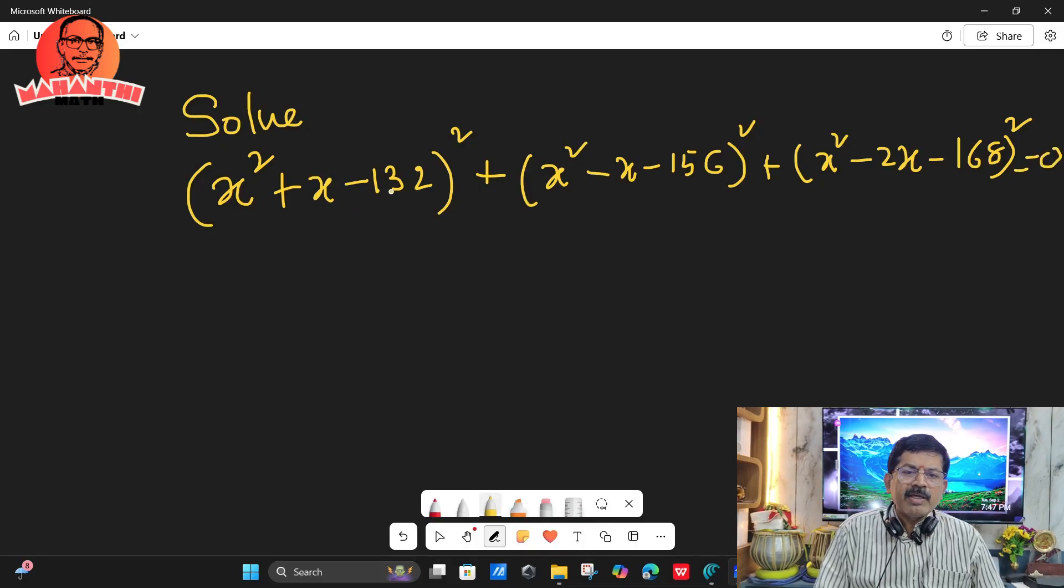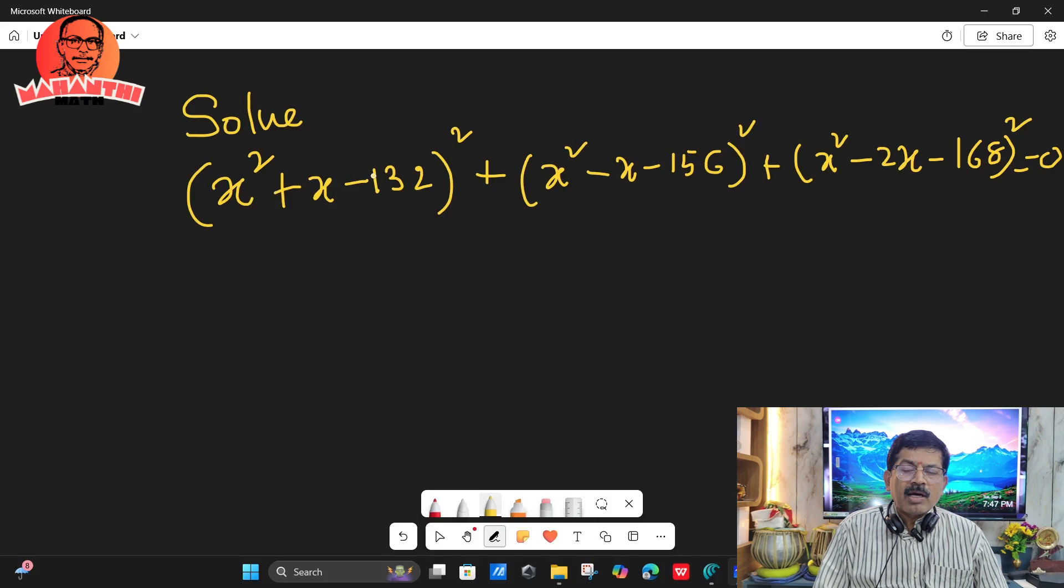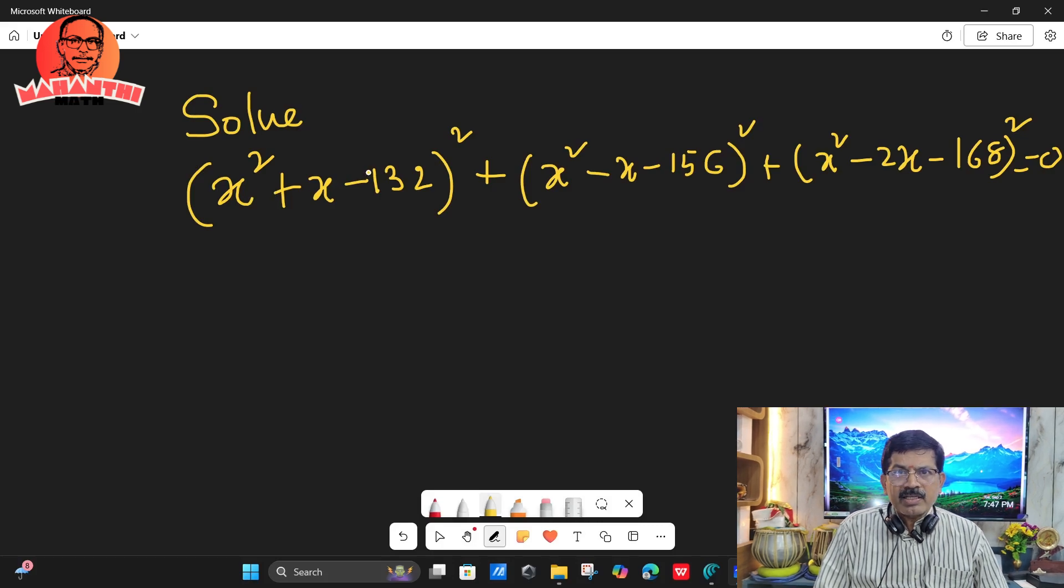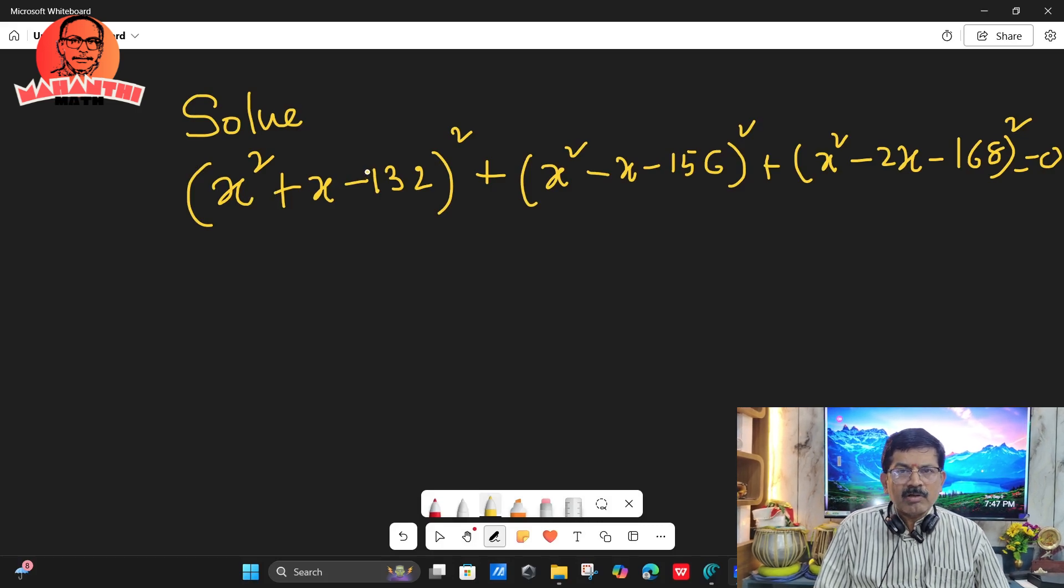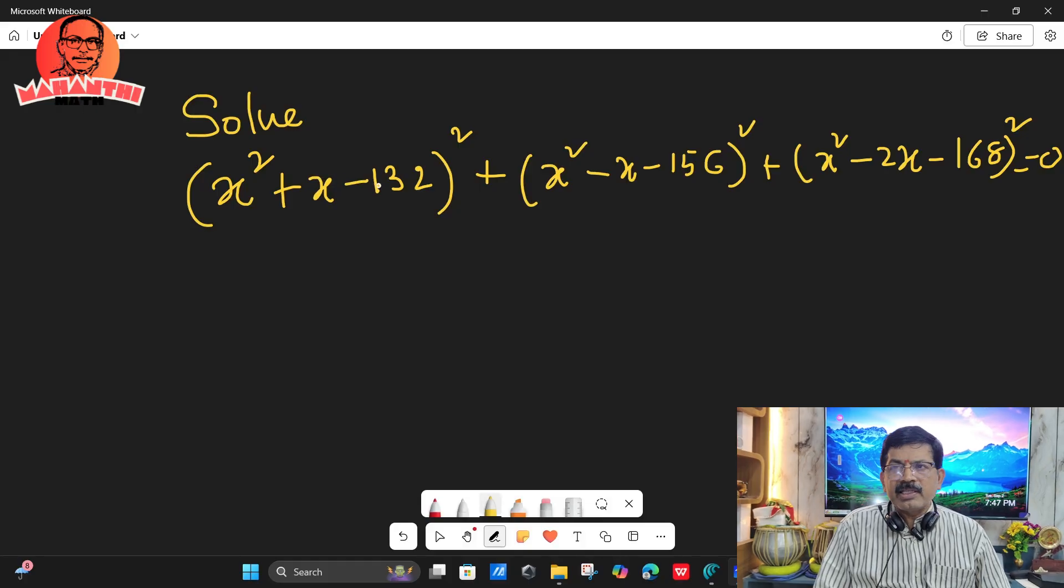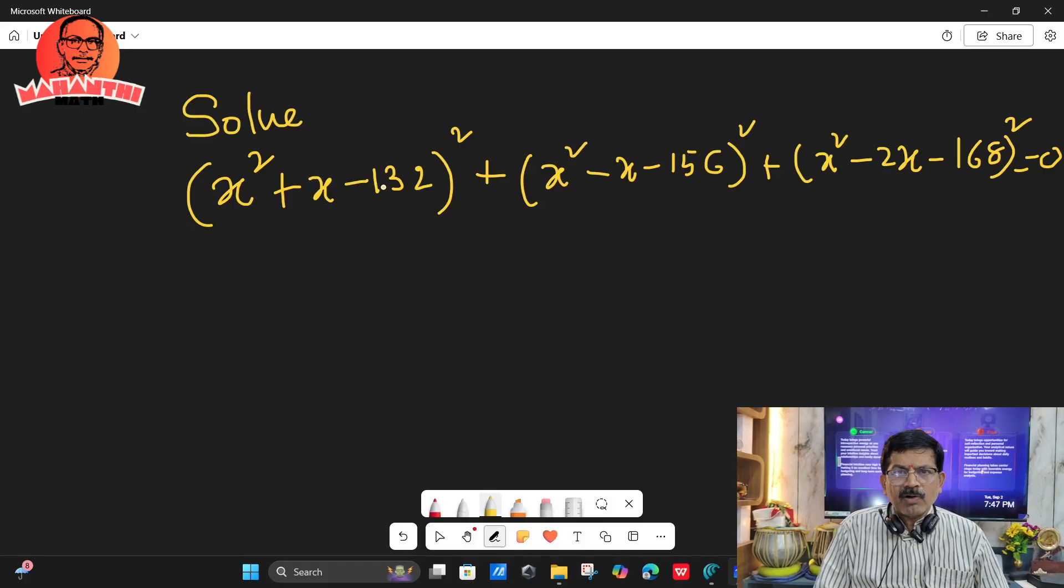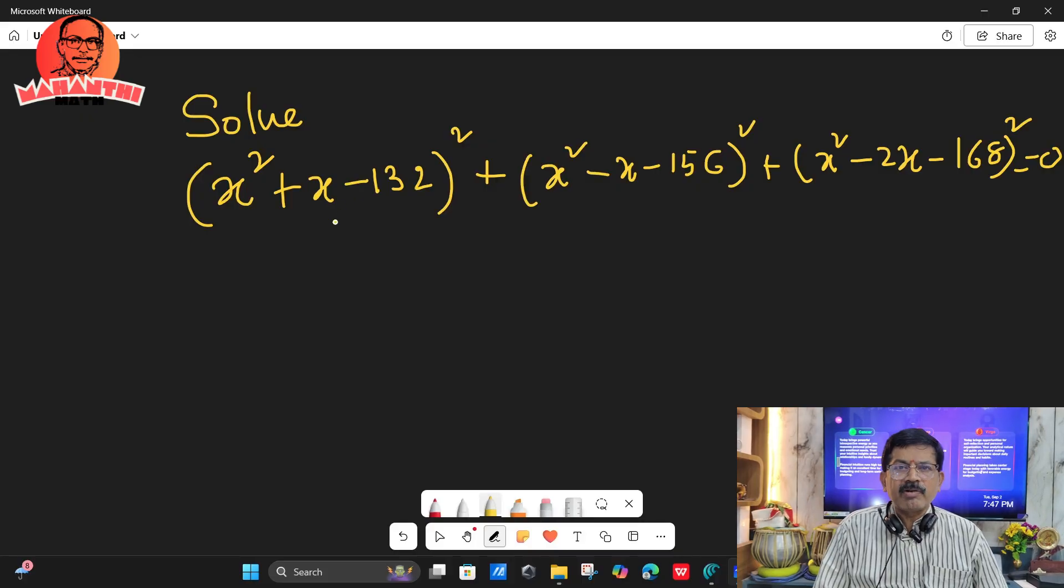It seems to be very difficult. Why? Because here quadratic equation whole square is there, so you will get a fourth degree equation. While solving fourth degree equation, so many things we have to use.